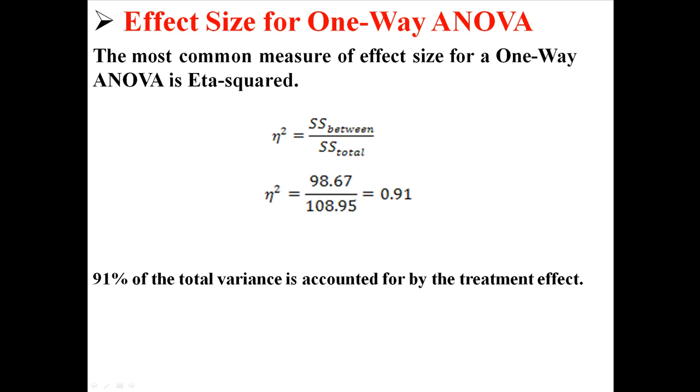That means that 91% of the total variance is accounted for by the treatment effect. If you remember effect size, 0.91 is huge. Almost all of the variability in this analysis came from our treatment effect. So we can conclude from this that there is a large meaningful difference between our three groups.